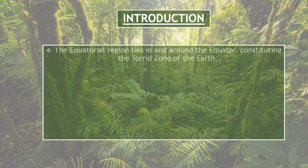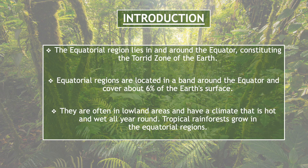First, we will find out what is the equatorial region. The equatorial region lies in and around the equator, constituting the torrid zone of the earth. Equatorial regions are located in a band around the equator and cover about 6% of the earth's surface.